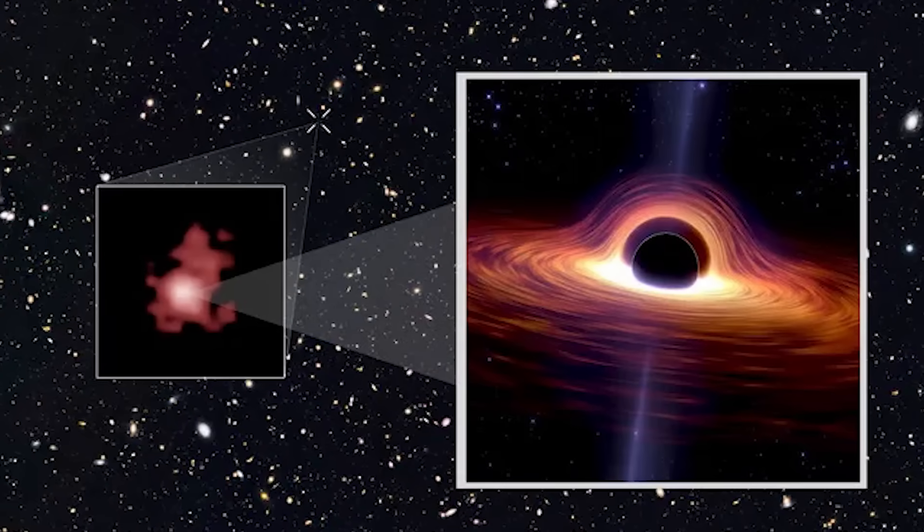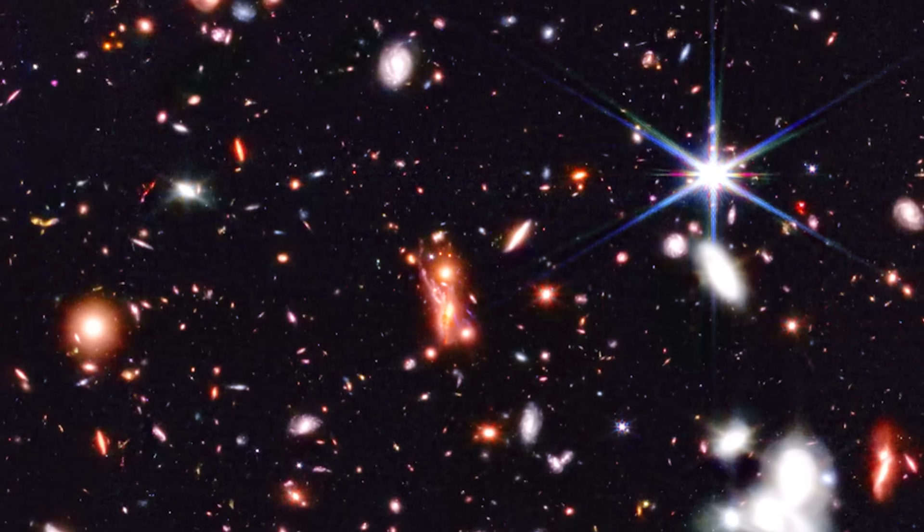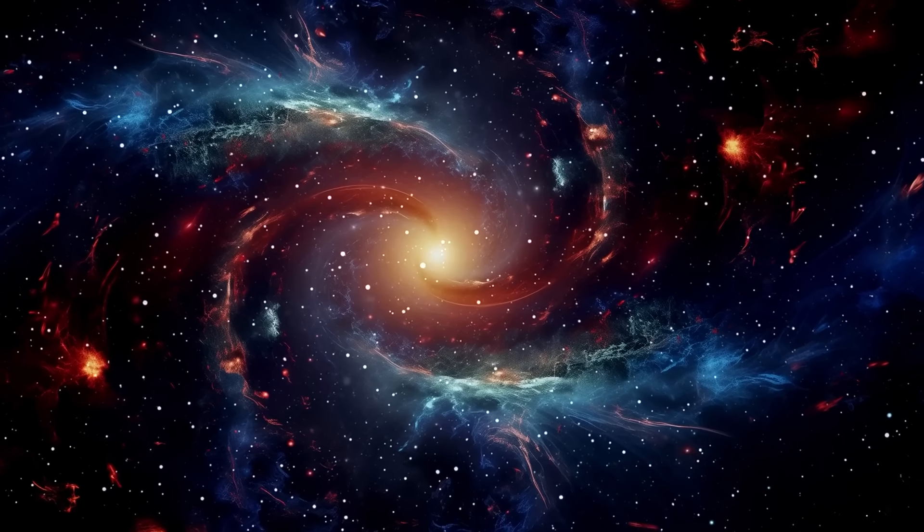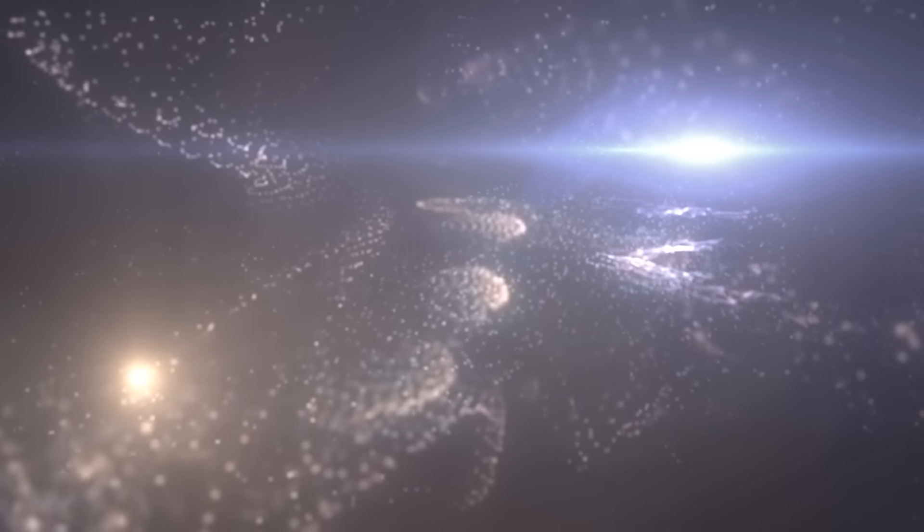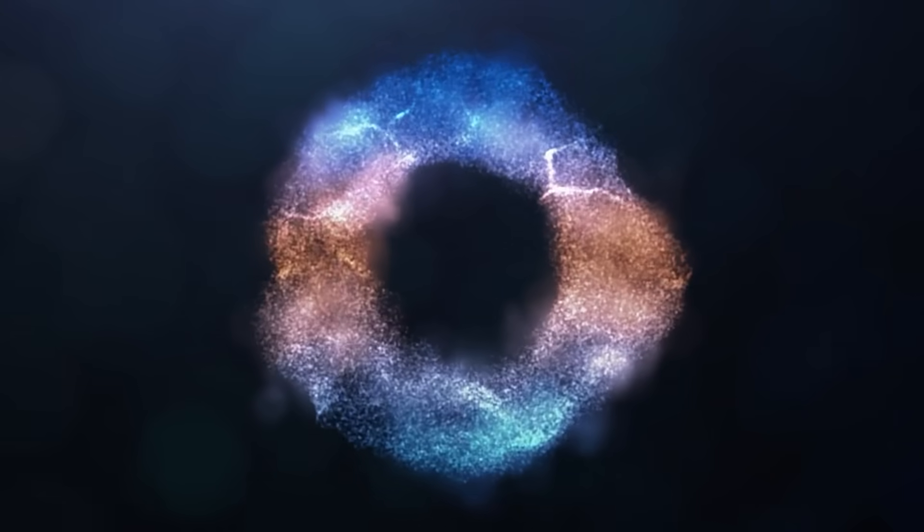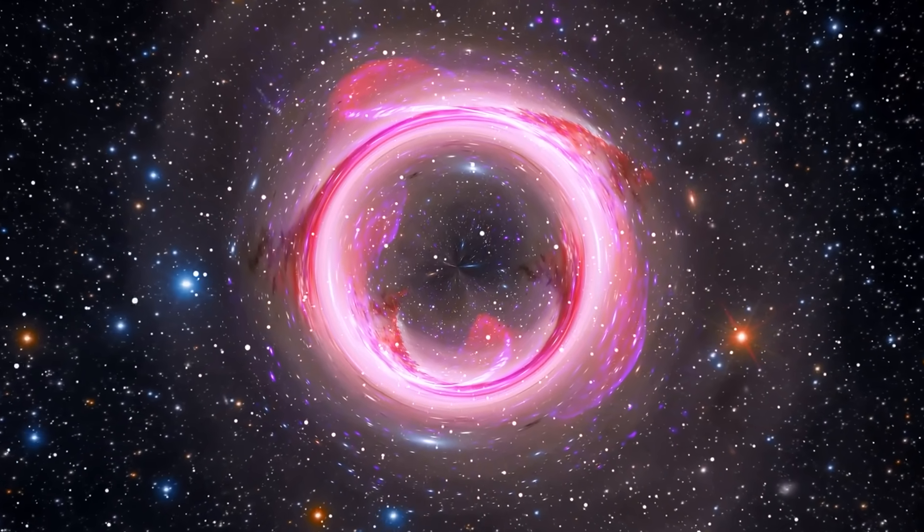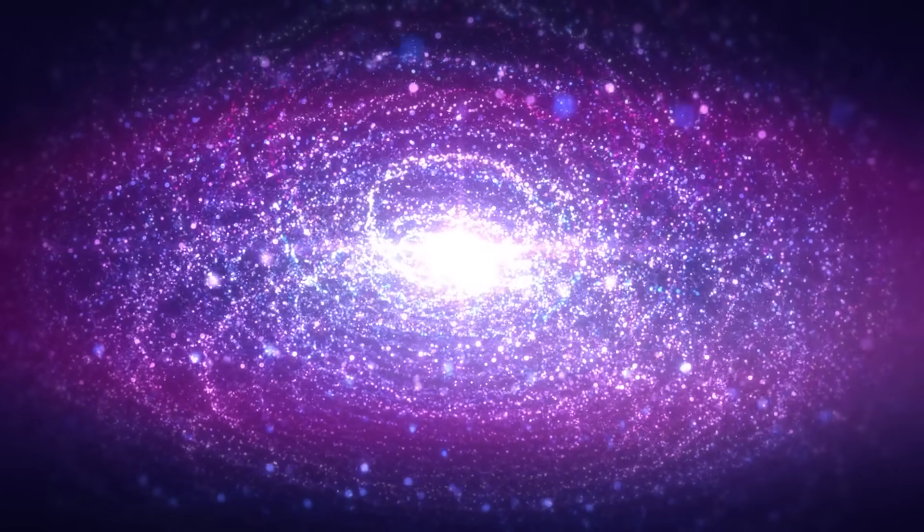The confirmation of this intermediate-mass black hole is more than a fascinating discovery. It's a key piece in the puzzle of galactic evolution. How do galaxies grow and change over time? How do they interact with each other? This massive black hole in the Large Magellanic Cloud provides crucial insights into these questions. This finding suggests that intermediate-mass black holes might be more common than we thought, hiding in the hearts of many smaller galaxies.